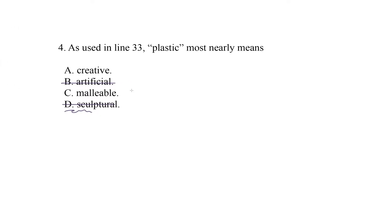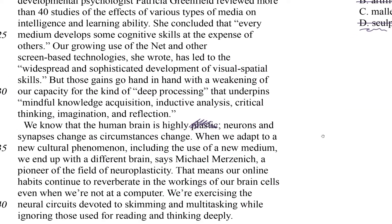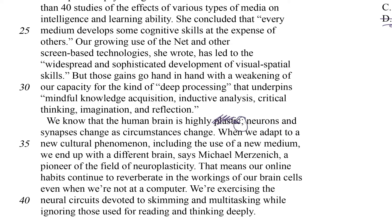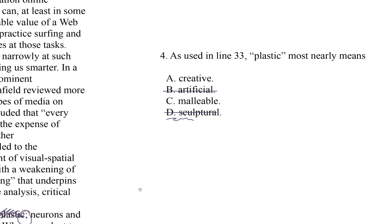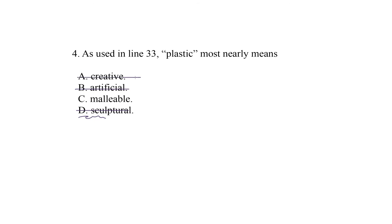So that leaves us with two choices: creative and malleable. I want to point out that this method isn't quite as effective as Plan A — without a firm prediction from context, we weren't able to cross out as many choices. So at this point, I'm going to lean on the context itself, specifically on this semicolon. Semicolons are super helpful because they connect closely related independent clauses — they often indicate that an author is about to say the same thing again in a slightly different way. Neurons and synapses change as circumstances change — this tells us we need a word really close to changeable. Creative doesn't mean changeable, so we can cross it off, and we're left with malleable, which means precisely that: moldable, just like plastic.